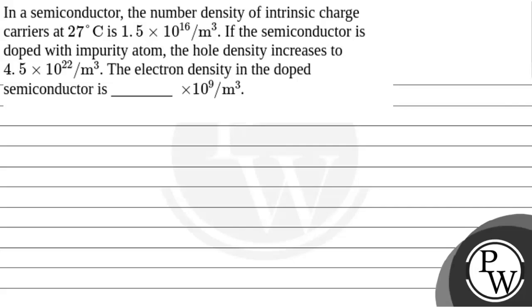In a semiconductor, the number density of intrinsic charge carriers at 27 degrees Celsius is 1.5 × 10^16 per meter cube. If the semiconductor is doped with impurity atom, the hole density increases to 4.5 × 10^22 per meter cube.